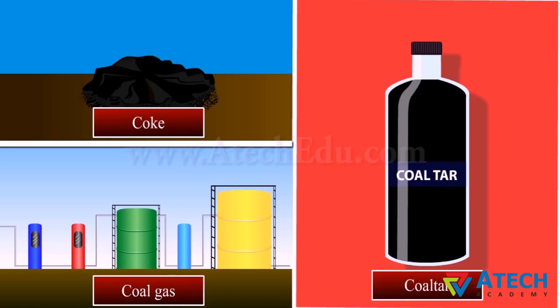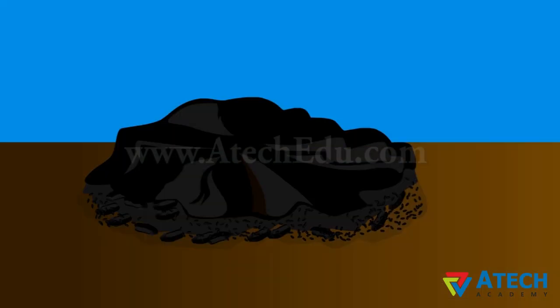Coal is processed in industry to get some useful products such as coke, coal tar and coal gas. Coke is a tough, porous and black substance. It is an almost pure form of carbon. Coke is used in the manufacturing of steel and in the extraction of many metals.